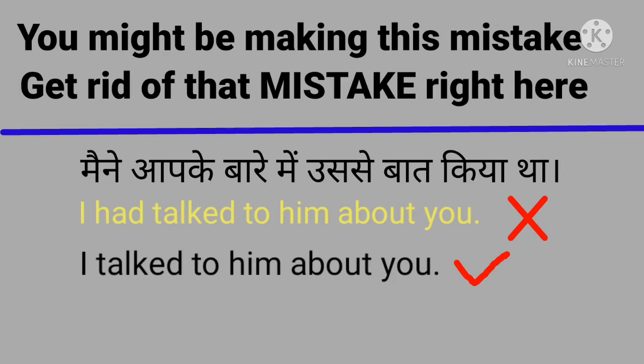So, we just translate Hindi sentences that end in था — बात की थी, आया था, बताया था — using past perfect, and that is incorrect. If you're talking about one action, a sentence that has only one action, use past simple. Don't use past perfect tense. If you don't use past perfect tense at all when you speak or write, more than 95% of sentences about past finished actions would be correct.